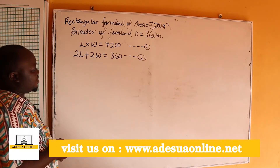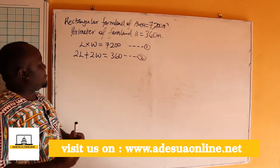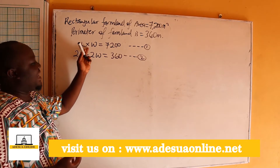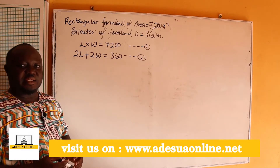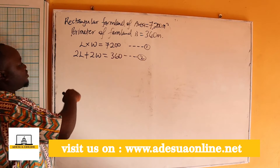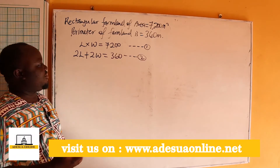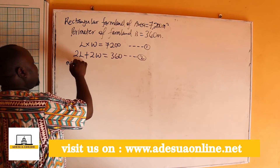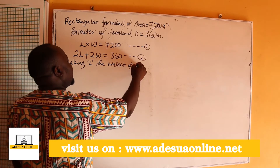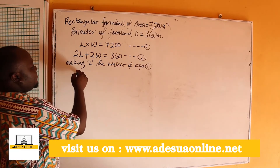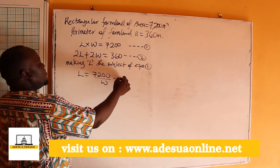We are going to solve this simultaneously. We can't use the elimination method here because the variables are multiplied, not separated by addition. So the best method to use is the substitution method. We are going to make L the subject of equation 1, giving us L equals 7,200 over W. We name this equation 3.